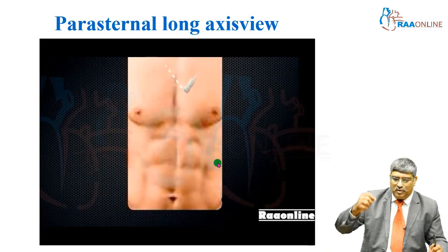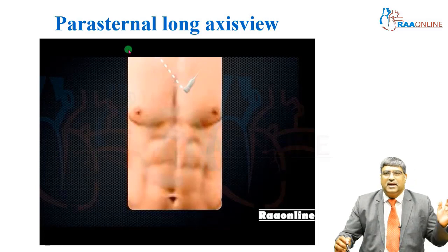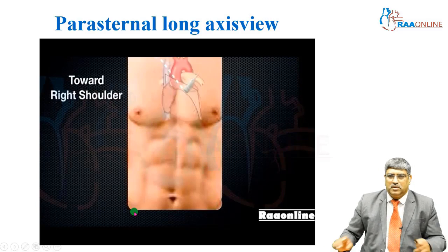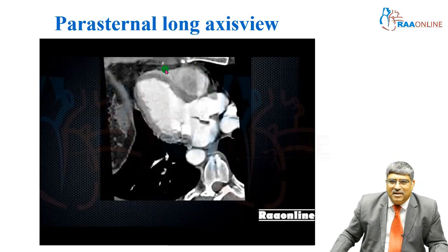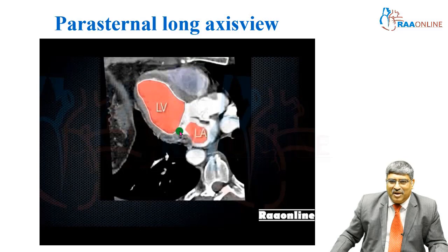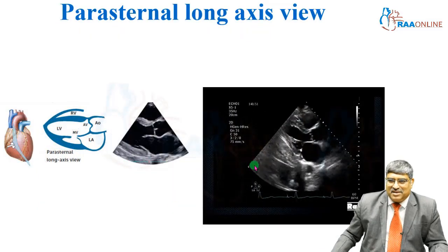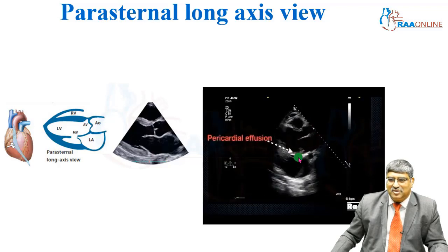Coming to the parasternal view, you place the probe directly over the heart with the probe light towards the right shoulder. Here the cardiac structure is being seen — the left ventricle, left atrium with the mitral valve in between, the right ventricle outflow tract, the ascending aorta, descending aorta, and the pleural space. This is the parasternal long axis view showing the right ventricle outflow tract, left ventricle cavity, aortic valve, mitral valve, and the LA. There may be a small pleural collection visible.